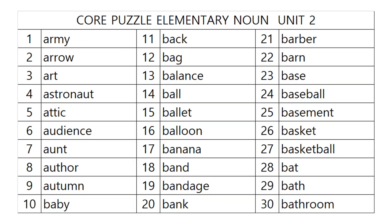1. Army. Army. 2. Arrow. Arrow. 3. Art. Art. 4. Astronaut. Astronaut. 5. Attic. Attic. 6. Audience. Audience. 7. Ant. Ant. 8. Author. Author. 9. Autumn. Autumn. 10. Baby. Baby.